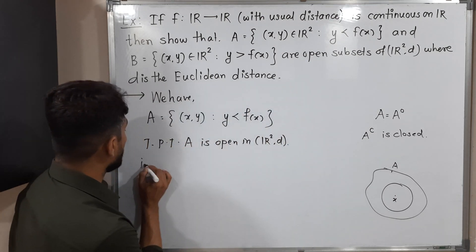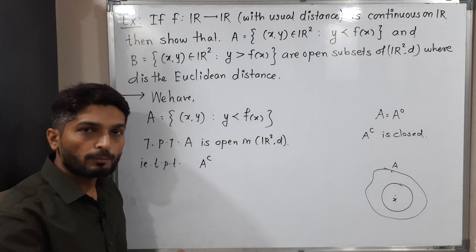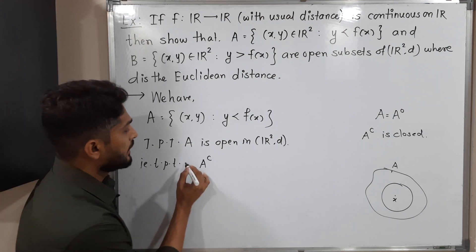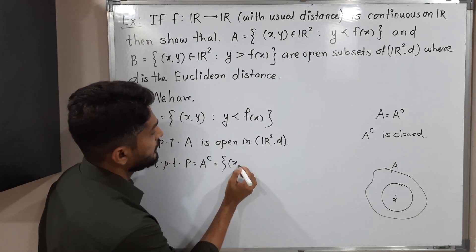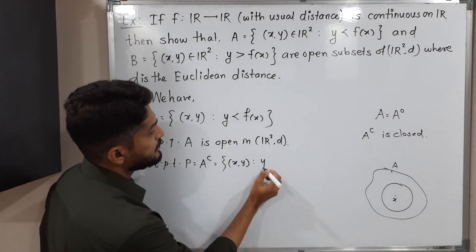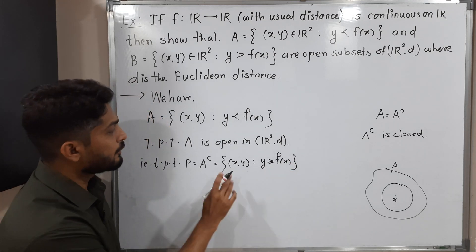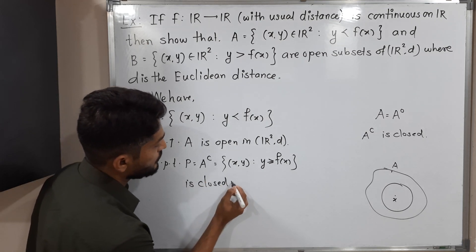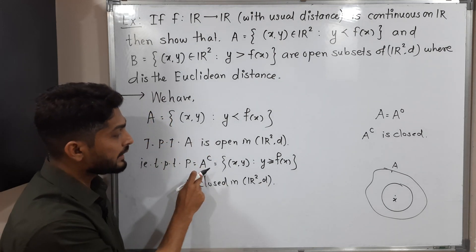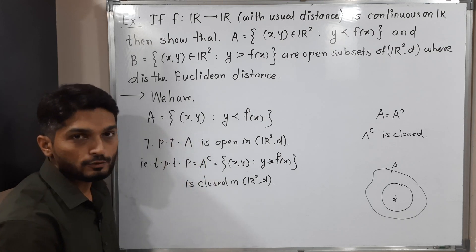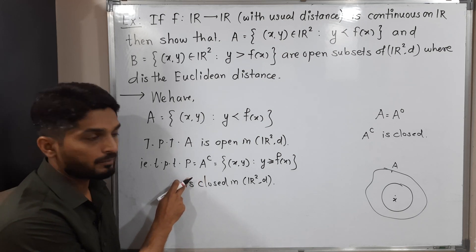We need to prove that A complement is closed. For simplicity I am going to denote A complement by P. The definition of A complement is exactly the opposite of A: where y < f(x) in A, in P we have y ≥ f(x). We have to prove P is closed in ℝ² with Euclidean distance d. Our main target is to prove A is open, and we are proving its complement is closed so we can say the set is open.